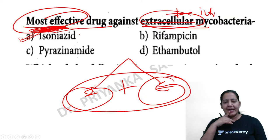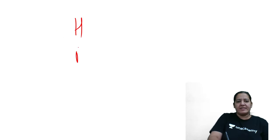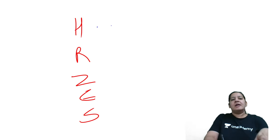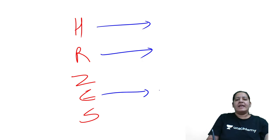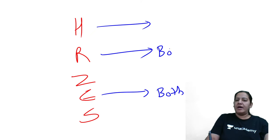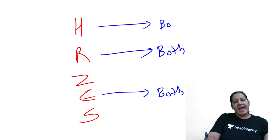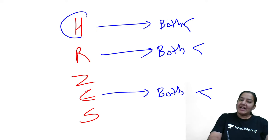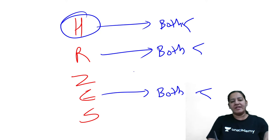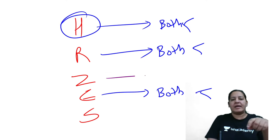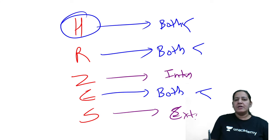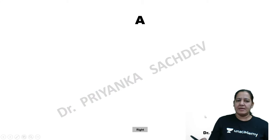To summarize the intracellular/extracellular activity: H, R, and E act against both intra and extracellular bacteria. Z acts only intracellularly. S (streptomycin) acts only extracellularly. Among H, R, and E — which all act against both — H (isoniazid) is the most effective. The most effective drug against either intra, extra, or both is isoniazid.